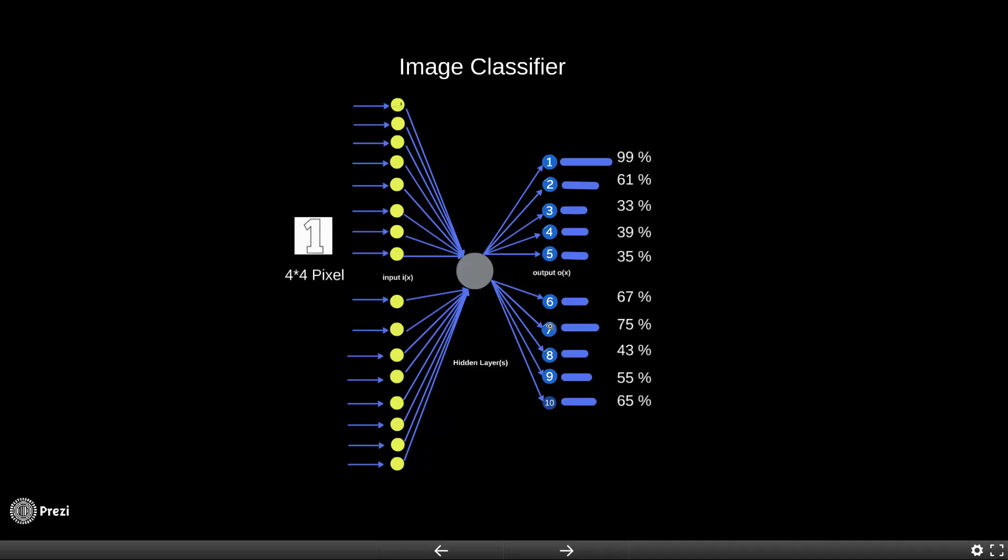So this is how image classification works with a feed forward neural network. Now let's take a closer look at a single layer and try to understand the different components from a low-level perspective.